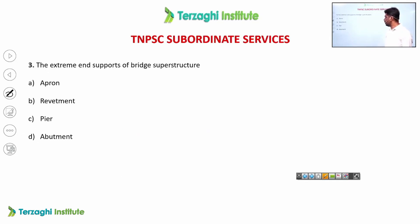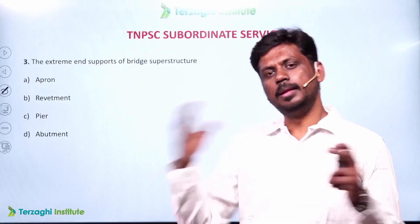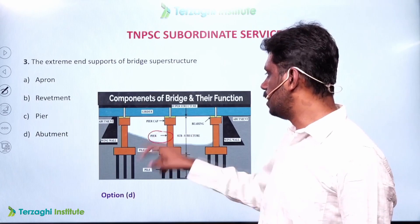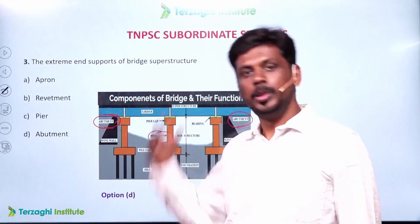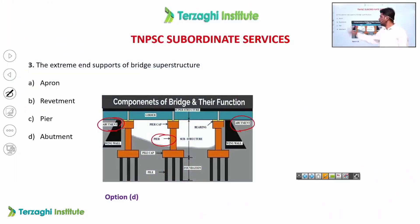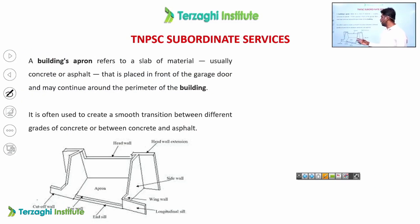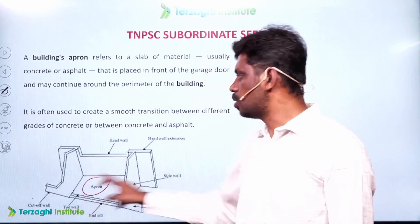The extreme end supports of a bridge structure are called abutments. A bridge has a group of piers as intermediate supports. A wall built along a slope to avoid erosion of the shoreline is called a revetment wall. The floor surface at the base of the structure is called an apron.